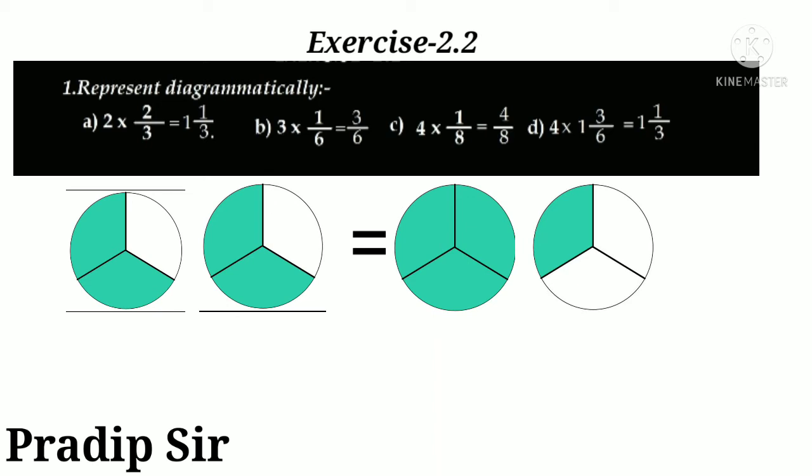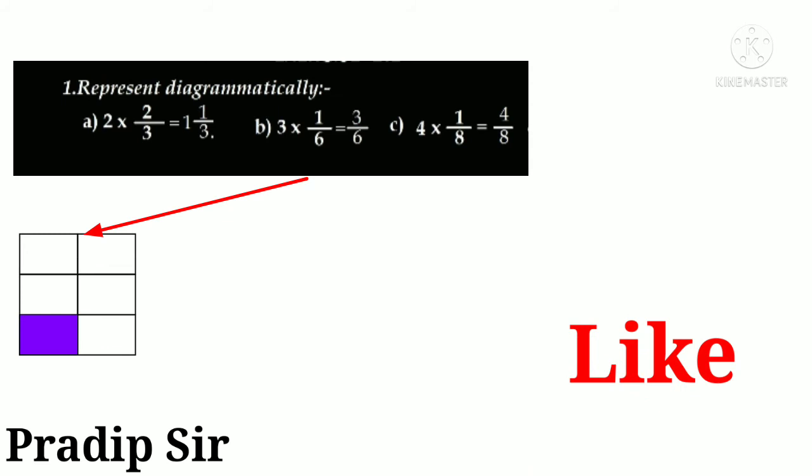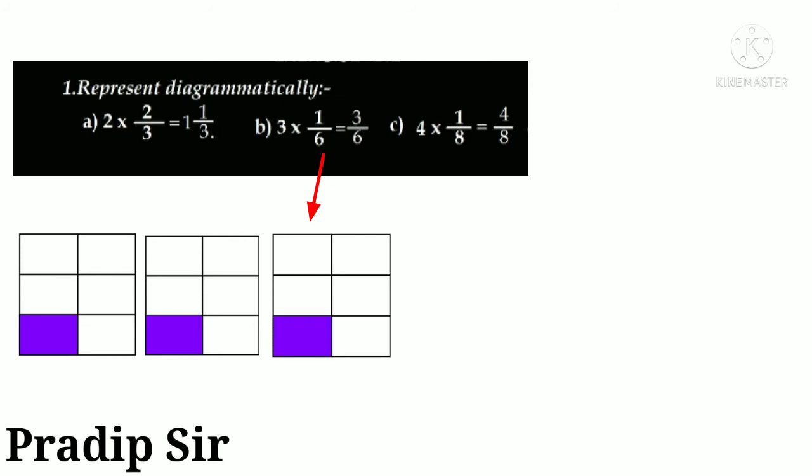Now see question number b. Here it's written: three times 1/6. That means out of six parts, one part is shaded—1/6 three times. So we'll draw three diagrams. Here you see three diagrams are there. Then after that, we give the equal sign.